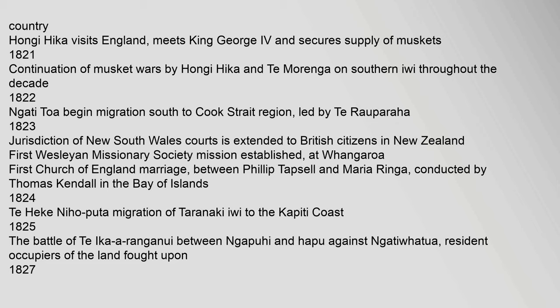1822: Ngati Toa begin migration south to the Cook Strait region, led by Te Rauparaha. 1823: Jurisdiction of New South Wales courts is extended to British citizens in New Zealand. First Wesleyan Missionary Society mission established at Whangaroa. First Church of England marriage, between Philip Tapsell and Maria Ringa, conducted by Thomas Kendall in the Bay of Islands.